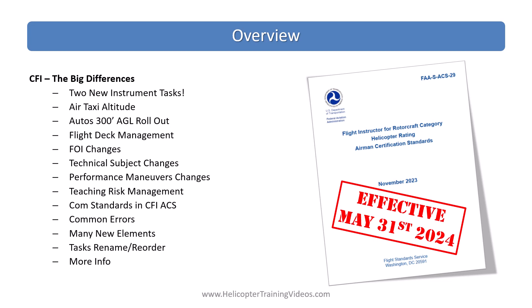In this video we're going to cover the two new instrument tasks in the CFI — yes, this is the CFI, not the CFII, but there are instrument tasks here — the air taxi altitude changes, the auto 300-foot AGL rollout, flight deck management task changes, the big changes to the FOI section as well as the technical subject section, and the performance maneuvers tasks teaching risk management commercial standards in the CFI ACS, common errors, and many new elements in many tasks, as well as task renames, reorders, and more. This is just the really big differences — we're not going to go line by line through the ACS.